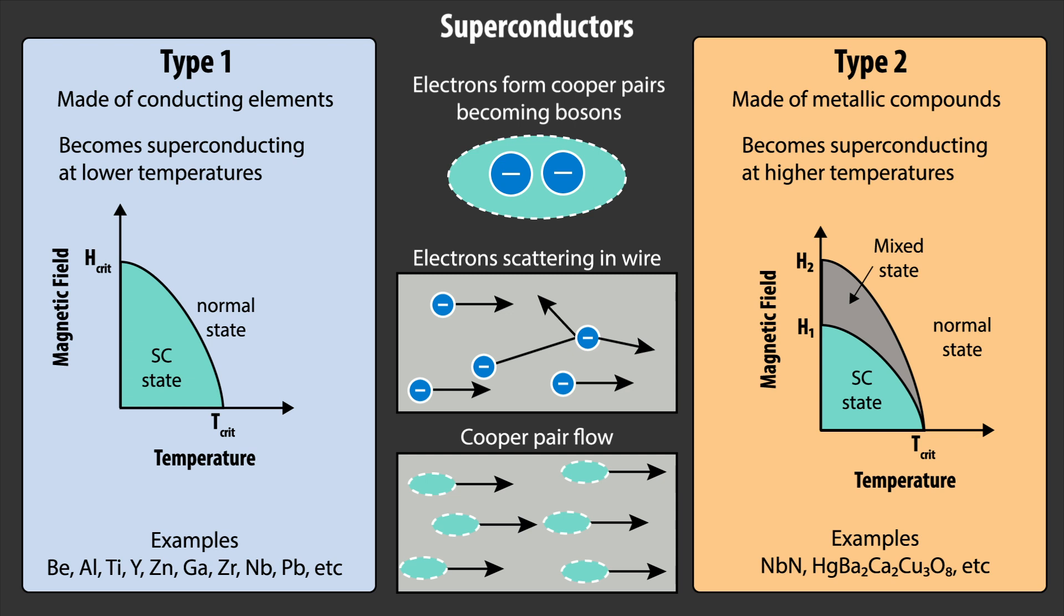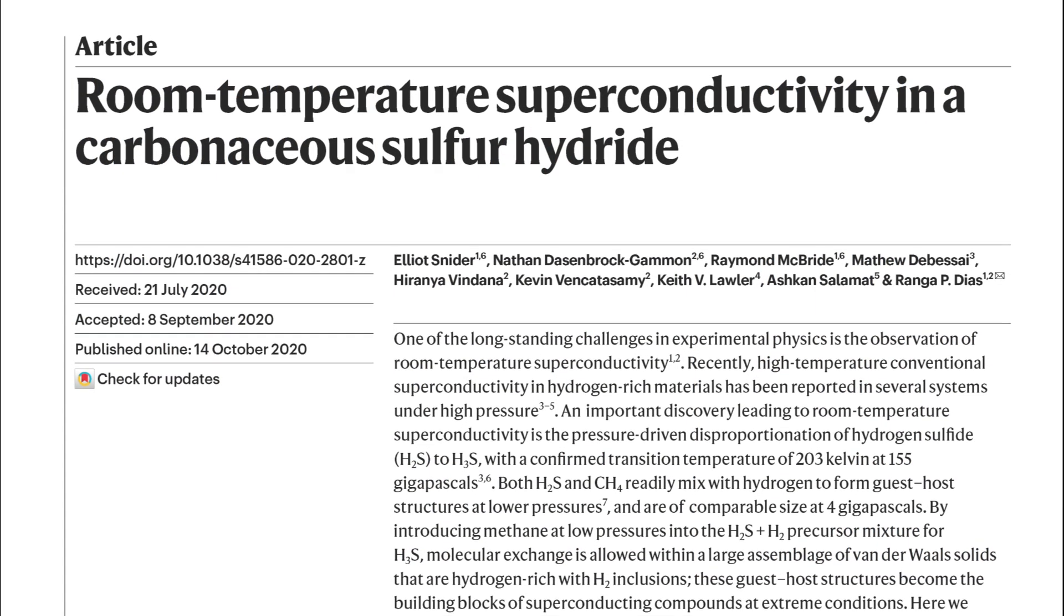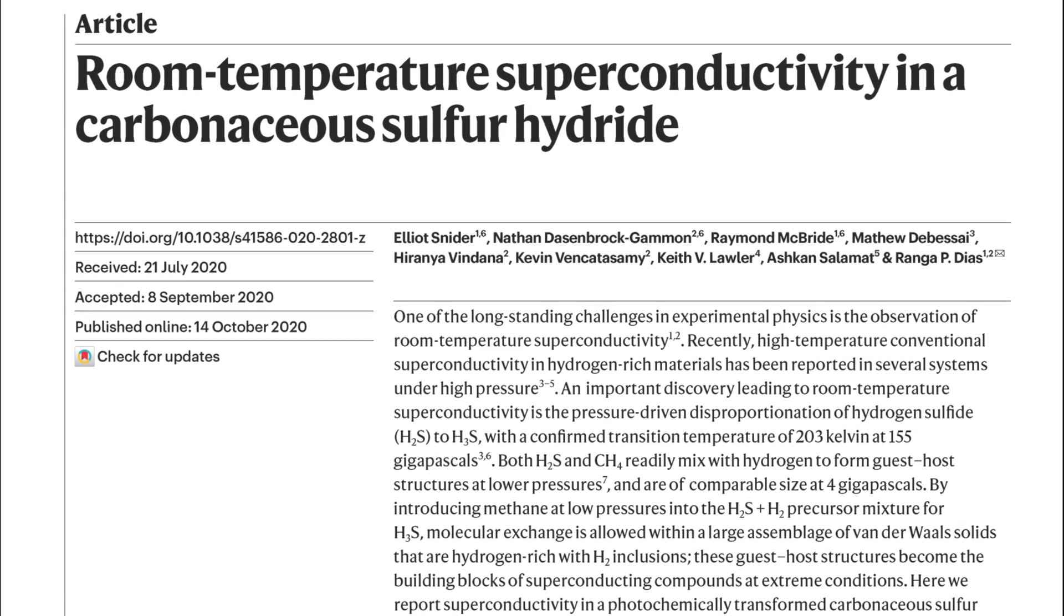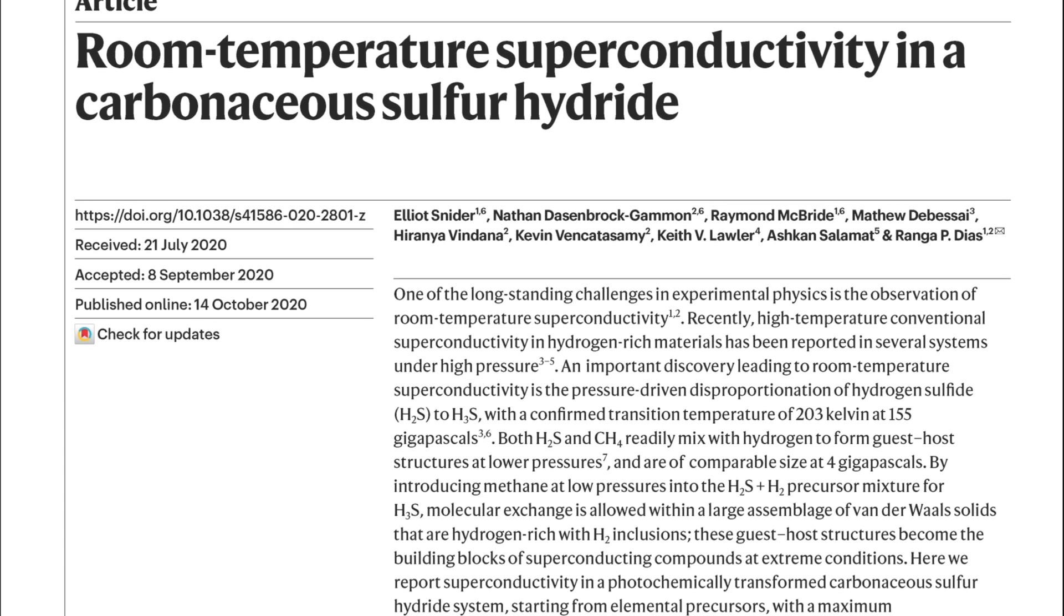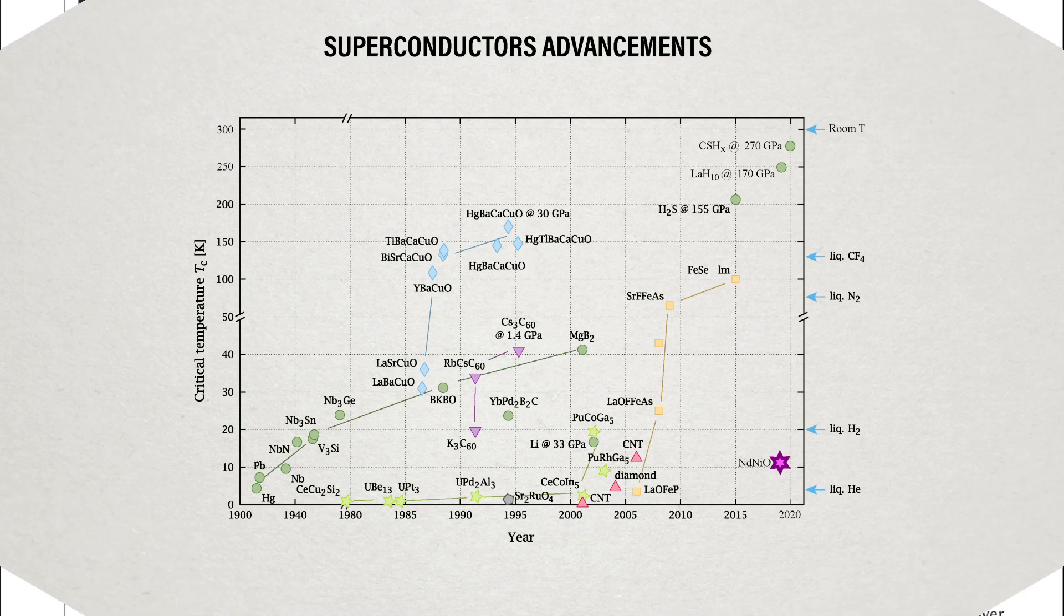They also exhibit a mixed superconducting state, when the diamagnetism of the superconductor can be locally overcome, and vortices can form from magnetic flux. While recently it has been demonstrated that room temperature superconductors are indeed possible, they currently only exist in high pressure environments, thus limiting their use in everyday life.